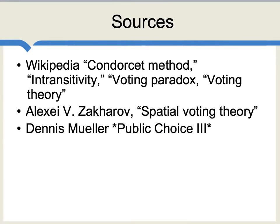This is a highly simplified model and no one is pretending it captures all of the intricacies of real-world democratic processes, but it's a simple way of seeing that in the multidimensional case, a process which appears democratic may actually be manipulated — reflecting the preferences of elites, insiders, or politicians who are manipulating the agenda. There's a large literature on this topic. Wikipedia has good entries such as Condorcet Method, Transitivity, Voting Paradox, and Voting Theory. For a more technical piece, there's one by Zakharov called Spatial Voting Theory, which has a lot more mathematics. And a very good book on this topic is Dennis Mueller's Public Choice III.